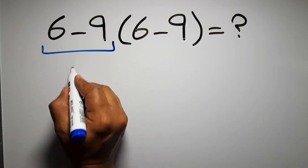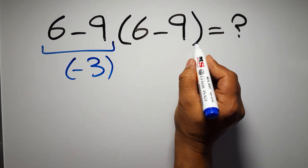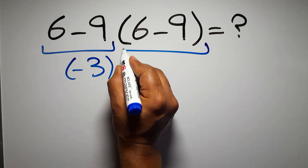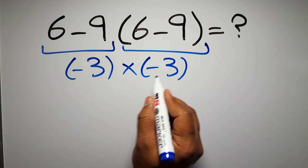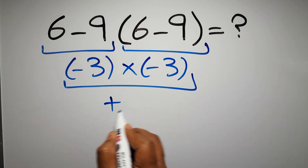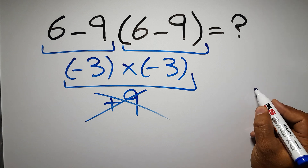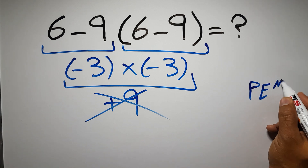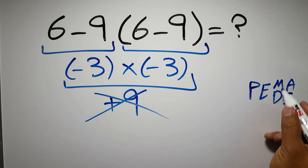Six minus nine gives us negative three, and again here inside these parentheses we have six minus nine, so negative three times negative three which equals positive nine. But this answer is not correct because according to the order of operations, first we have to do parentheses, then exponents, then multiplication or division, and finally addition or subtraction.